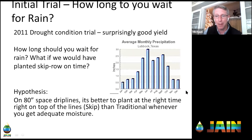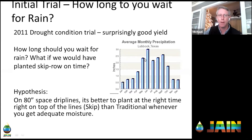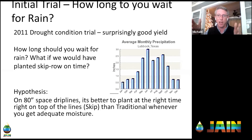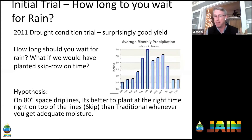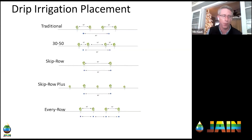The yields from that skip row approach weren't bad, and the wheels started turning. Should we keep waiting for rainfall and do the traditional approach? Or should we plant based on climate and soil conditions — plant right on top of each row? The yield was not bad, and they didn't even plan it that way. What if we plant it on time using this method? They developed the hypothesis: could we just plant on top of those drip tapes, and even with fewer plants, if we do it on time, would that be as good or maybe better?